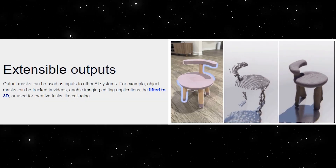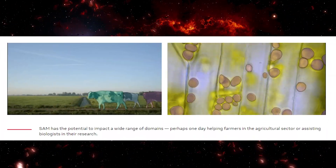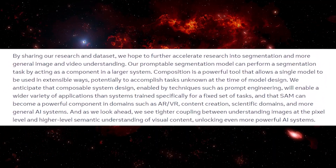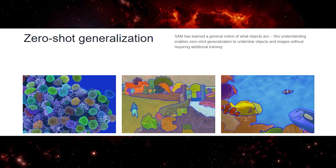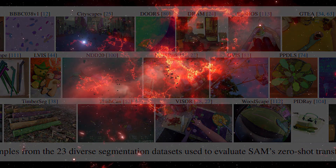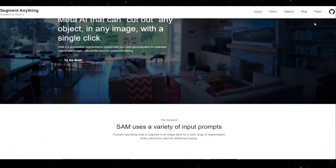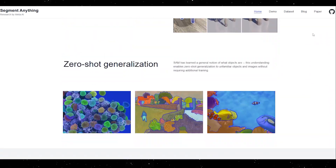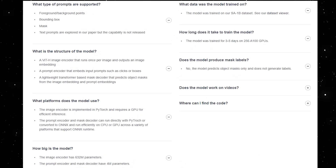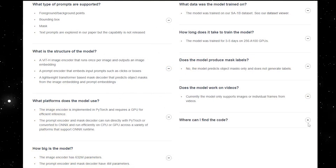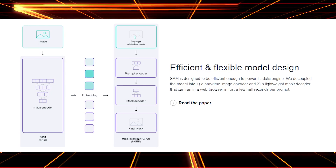In the future, we can expect to see more applications of SAM and similar models in domains such as AR/VR, content creation, scientific research, object tracking, space imagery, and more general AI systems. The ability to adapt to specific tasks without requiring additional training — known as zero-shot transfer — could revolutionize how we approach image segmentation, making it accessible to a broader range of users and applications. In conclusion, the Segment Anything project is a groundbreaking initiative that aims to democratize image segmentation by introducing the SAM model and the SA-1B dataset. By overcoming the challenges of data scarcity and task-specific expertise, this project opens up new possibilities for computer vision applications and AI research. With its versatile capabilities, SAM has the potential to become a powerful component in various domains, enabling a new era of AI-driven solutions.